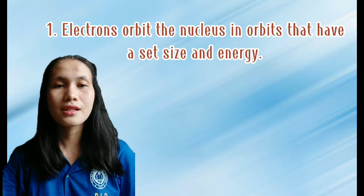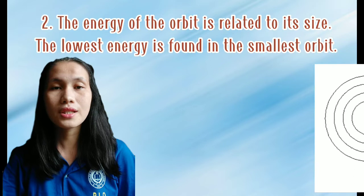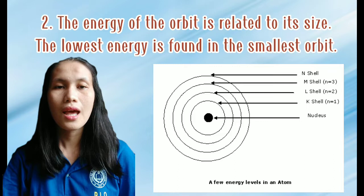The main points of the Bohr model are: First, electrons orbit the nucleus in orbits that have a set size and energy. Second, the energy of the orbit is related to its size, with the lowest energy found in the smallest orbit. And lastly,